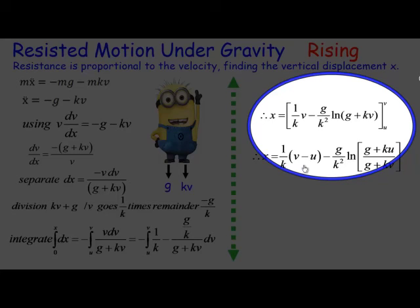And if you go over here, you can eventually get an expression for x. And if you actually evaluate between u and v, you can see here this is our displacement x, and it's involving velocities u and v. Well, thank you for watching. We'll look at the resistance proportional to the velocity squared in the next video.